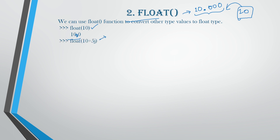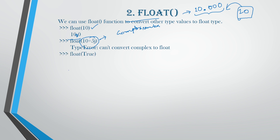Next, if you have a complex number like 10+5j, you cannot convert complex to float. Then for Boolean values: True always has a value of 1 in Boolean, so in float it is going to give us 1.0. For False, you are going to have it as 0.0.